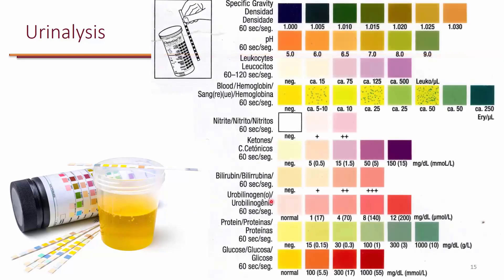You don't need to memorize this — it's just for your information. Based on the color, they report the results of the UA. For example, one thing they look for is the presence of nitrite. There's a section on the strip for nitrite; they see how the color changes and tell you if it's negative, somewhat positive, or definitely positive. You can do this for other things too — for example, if they want to see if there's glucose present, a certain color indicates normal.